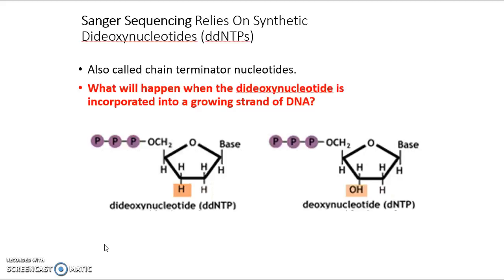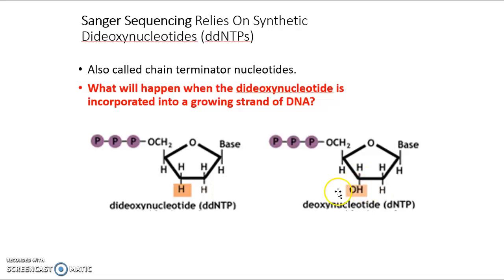Sanger, back in 1977, understood very well the chemistry of nucleoside triphosphates. A normal nucleotide has the base — adenine, cytosine, guanine, or thymine — attached to a five-carbon sugar. The three prime carbon has a necessary and essential hydroxyl group attached to it; that's the location where the next nucleotide is added during synthesis. DNA polymerase cannot work unless it has an overhanging hydroxyl group to which to add any nucleotide — that's simply how all DNA synthesis, in or out of a test tube, works.